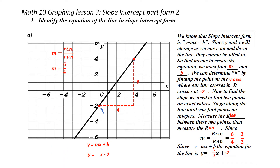Don't forget that we need to reduce. So the actual slope is three over two. At this point, I'm going to put this back into my equation and replace m with it. So my new equation is y equals three over two x minus two.